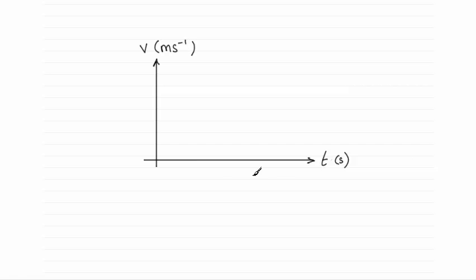All you need to do is just put in your two axes: V in meters per second and T measured in seconds.